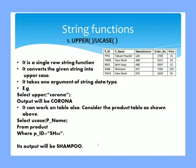The first function we are going to discuss is UPPER or UCASE. It is a single row string function and its purpose is to convert string into uppercase. It takes one argument of string data type. For example, if we write select upper corona, when this query is executed, the output will be CORONA in capital letters because its purpose is to display whatever is given as an argument in capital letters.